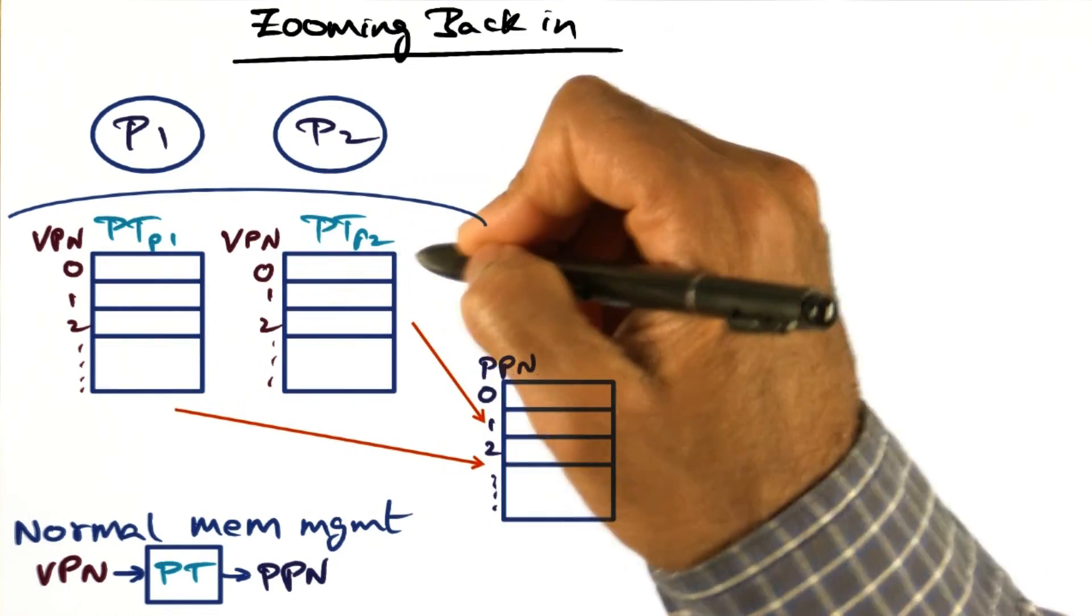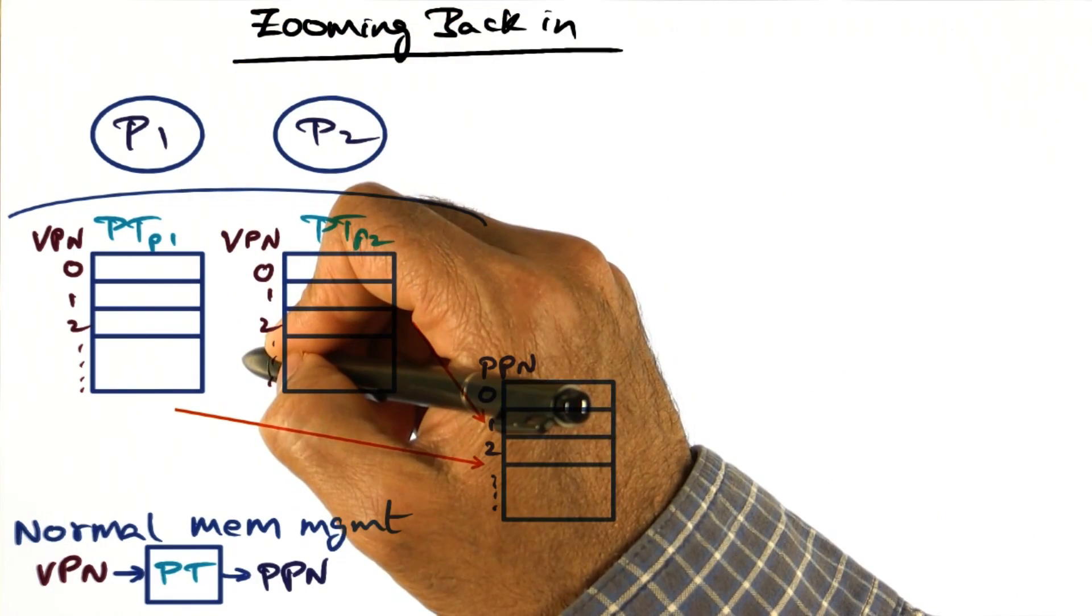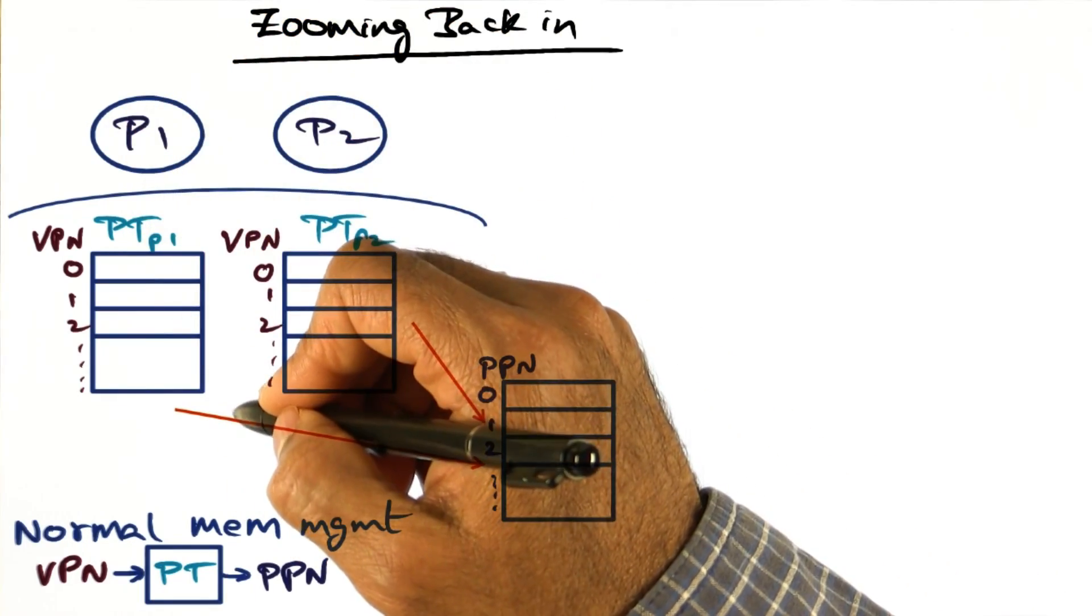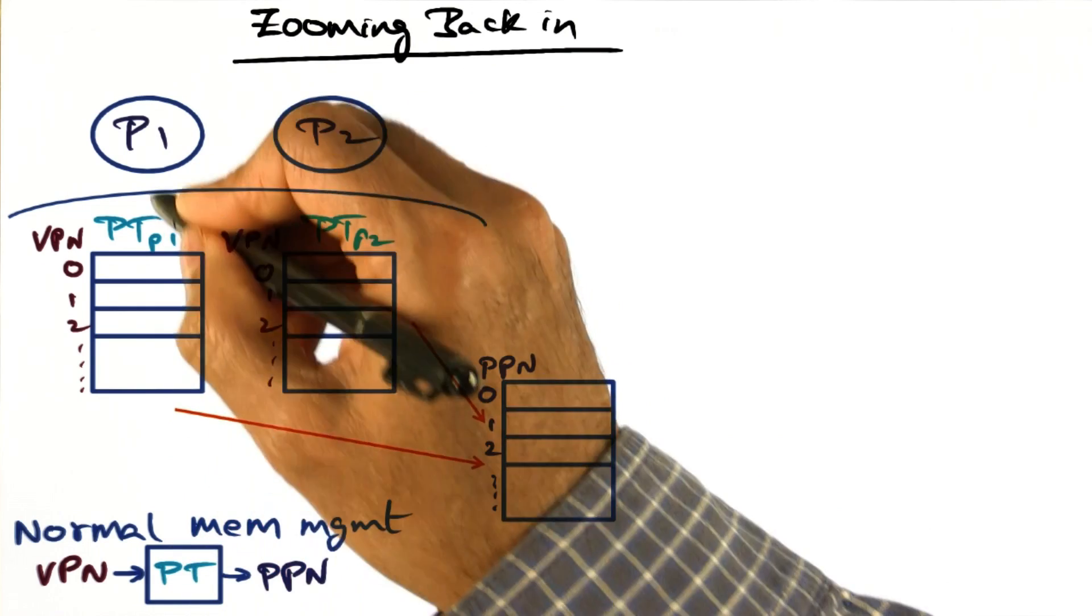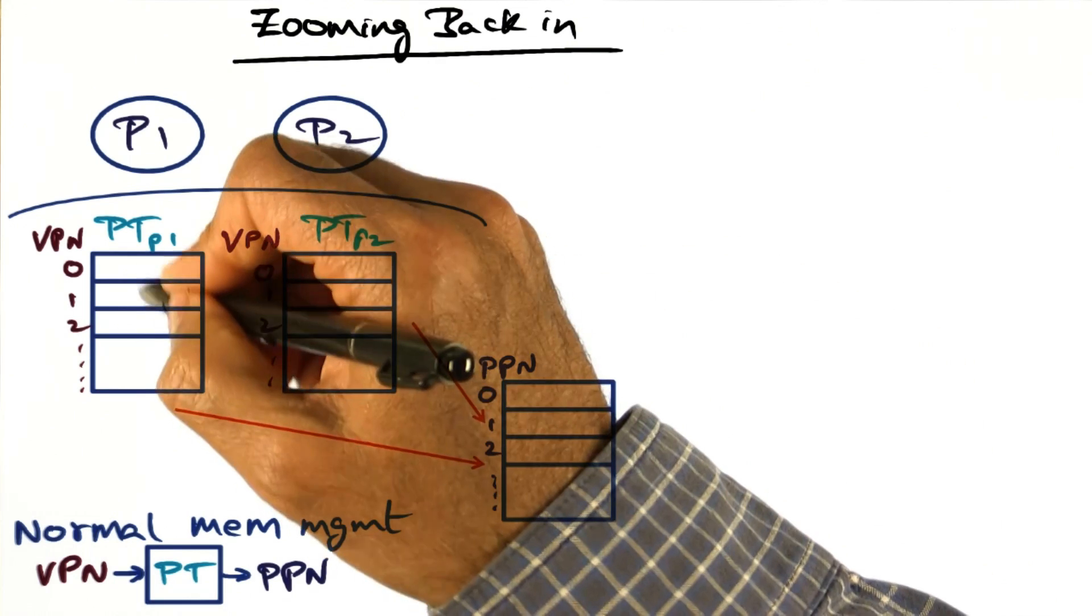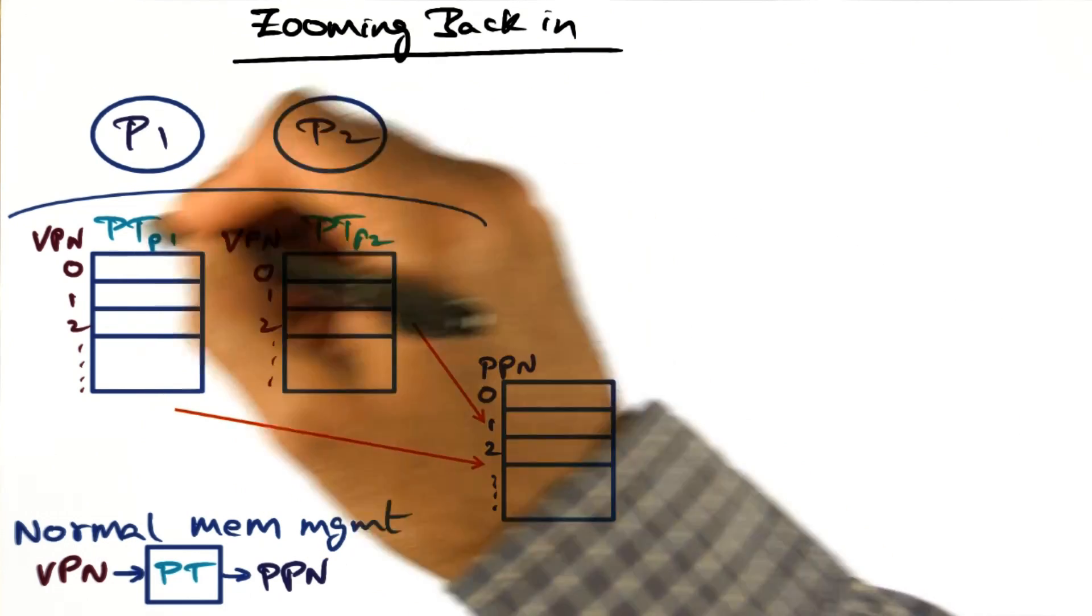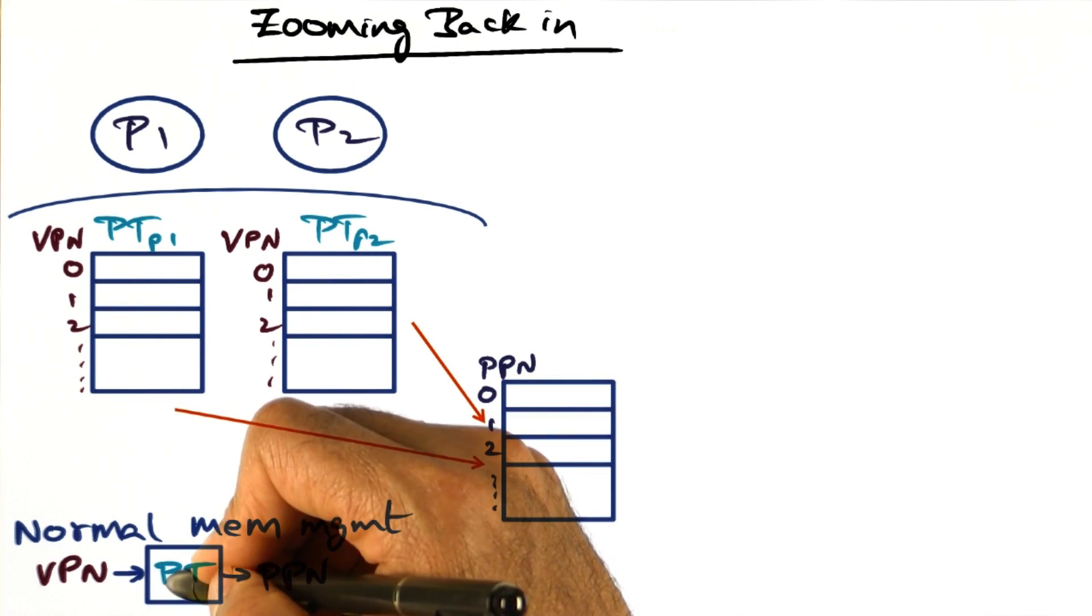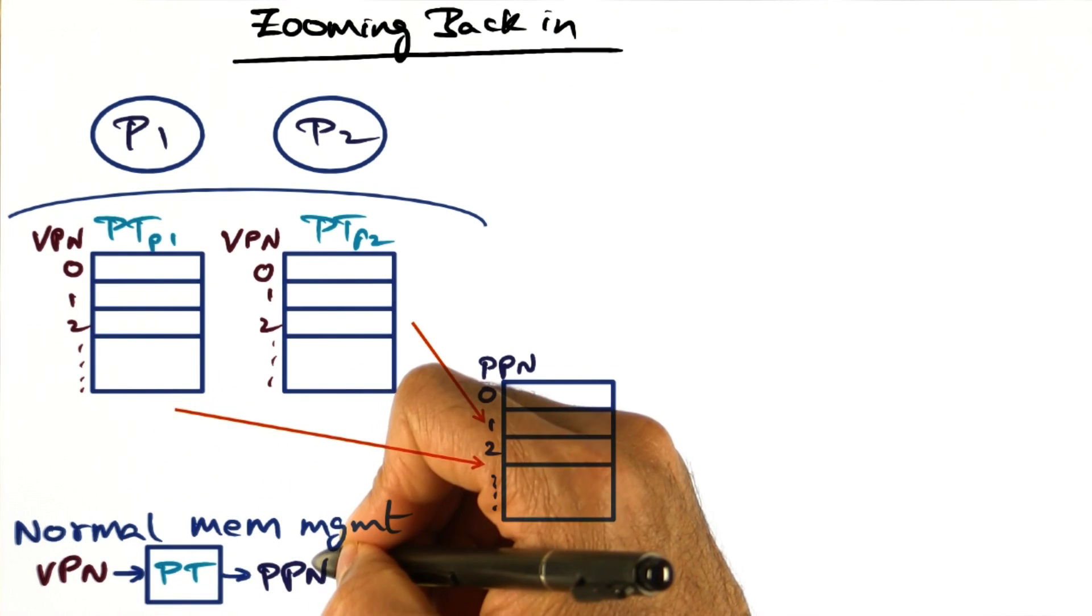The page table data structure that the operating system maintains on behalf of the processes supports the illusion by mapping the virtual page number of the process using the page table into the physical page number where a particular virtual page may be contained in physical memory. This is the setting in a non-virtualized operating system. The page table serves as the broker to convert a virtual page number to a physical page number.